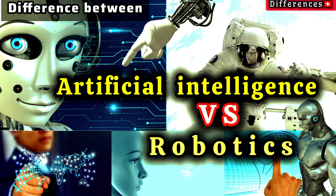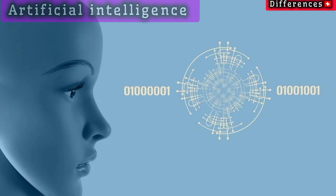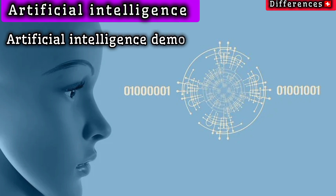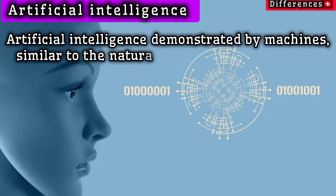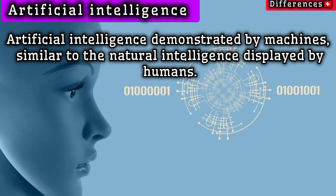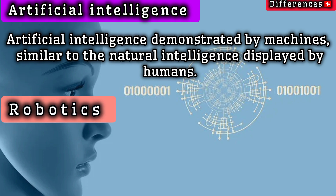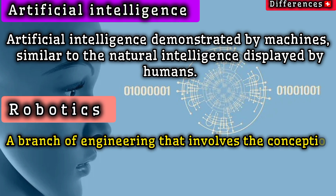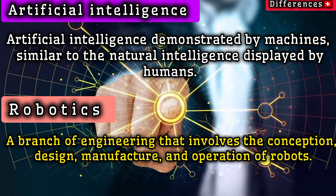In this video we will explain the difference between artificial intelligence versus robotics. Artificial intelligence is intelligence demonstrated by machines, similar to the natural intelligence displayed by humans. Robotics is a branch of engineering that involves the conception, design, manufacture, and operation of robots.